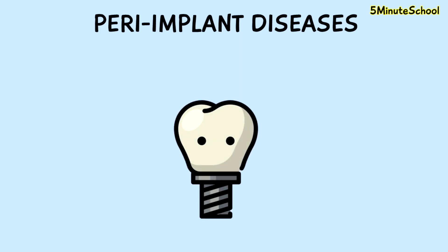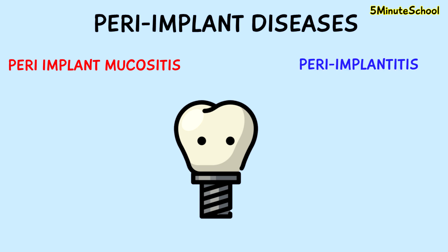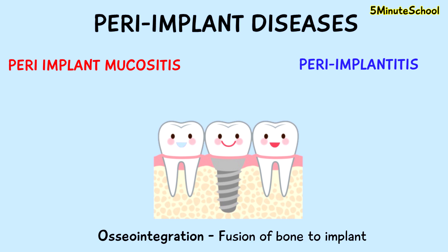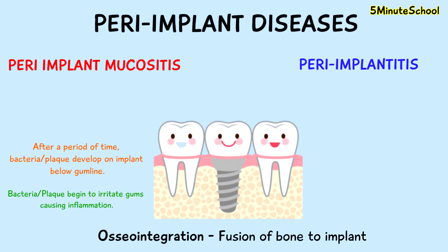In today's video, we're going to be talking about the differences between peri-implant mucositis and peri-implantitis. They're both types of peri-implant diseases. After placement of an implant, the implant interface fuses with the bone in a process called osseointegration. Just like on a natural tooth, bacteria may develop on the implant below the gum line.